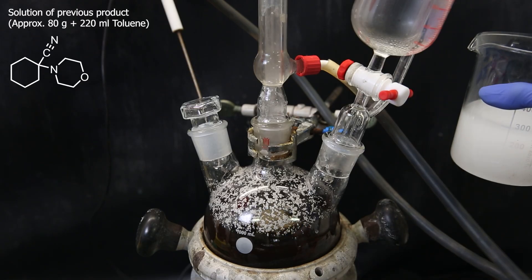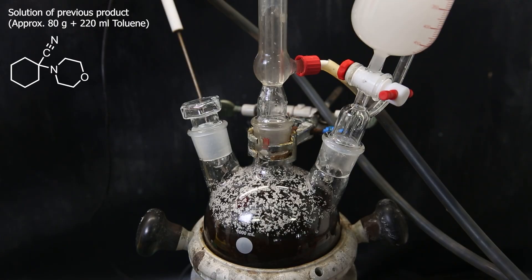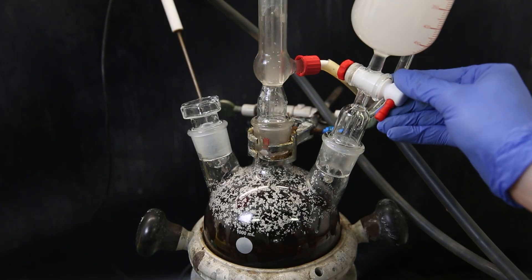And then, I add the cyanide product that had dissolved in toluene to the dropping funnel. I slowly add this solution to the flask, and the reaction is of course very exothermic.